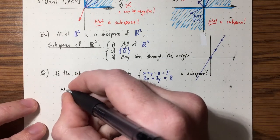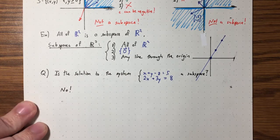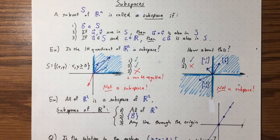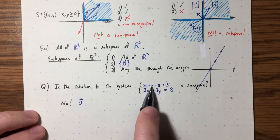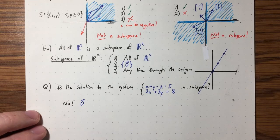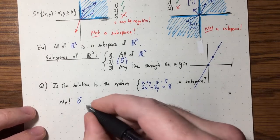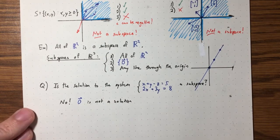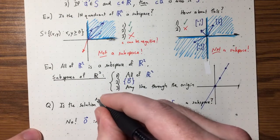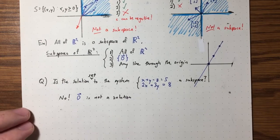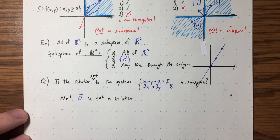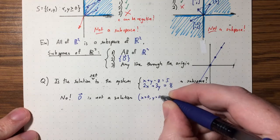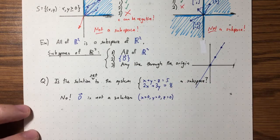The answer is no. Zero is not in my space — for zero to be a solution, X = 0, Y = 0, Z = 0 must satisfy all equations. But plugging into the first equation gives 0 = 5, which is nonsense. So the solution set is not a subspace because the zero vector is not a solution to this non-homogeneous system.